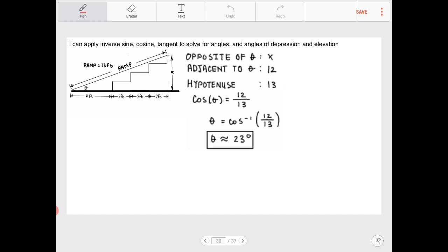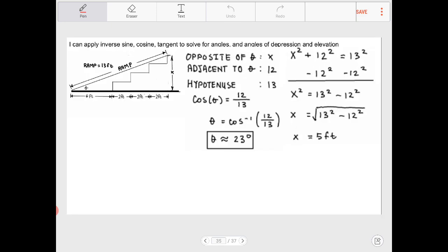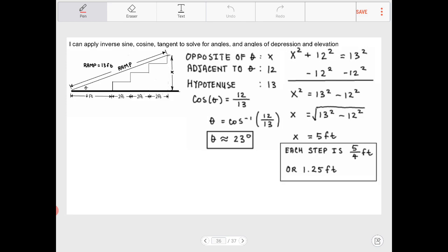Next, I need to figure out what x is, and I can do this using Pythagorean theorem. I know that x squared plus 12 squared is equal to 13 squared, but also if you recognize that this is a Pythagorean triple, it should be recognized that this is actually equal to 5. So each step, if the total height here is 5, and there are 3 steps in place here, or actually 4 steps, I need to divide by 4, so therefore each step is going to be 1.25 feet.